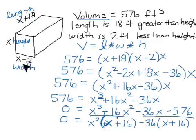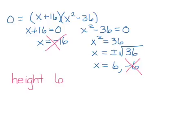The width is x minus 2, so our width would be 6 minus 2 which gives us 4. And then our length is our height plus 18. Since our height is 6, 6 plus 18 gives us 24.